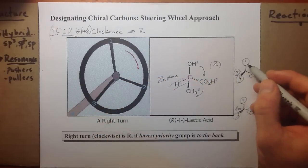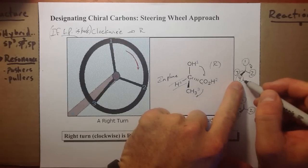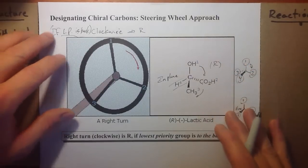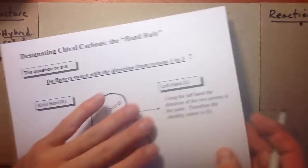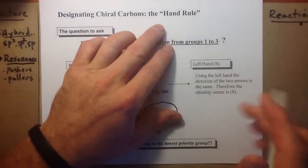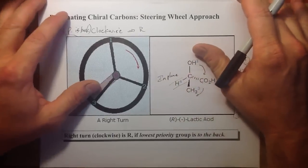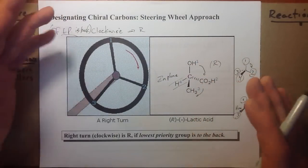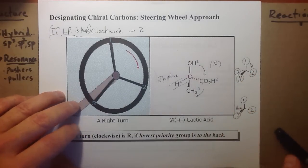There are other ways to approach it. You could switch the two groups, but you can just say one, two, three is clockwise. LP is to the front, that's S. If LP is to the back, clockwise is R. Setting priority is probably the hardest thing to do when you're looking at structures. Maybe the hand approach doesn't work for you, but either the hand approach or the steering wheel approach—you need to practice applying one of those two methods for setting the Cahn-Ingold-Prelog system of notation for asymmetric carbons, R or S. Bye-bye.